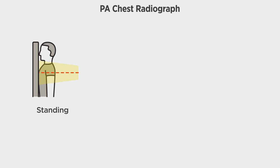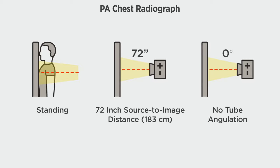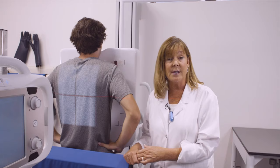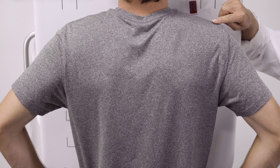In this view we will be demonstrating a PA chest. The PA chest should be performed with the patient standing at the upright bucky with a 72-inch source to image distance and no tube angulation. Our heart lies anterior and a little to the left, so we will always want the heart closest to the IR to reduce magnification. I have him PA at the upright bucky, with the IR one and a half to two inches above his shoulders, using the mid-sagittal plane and T7.